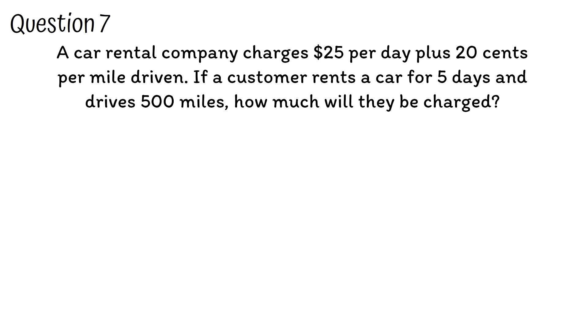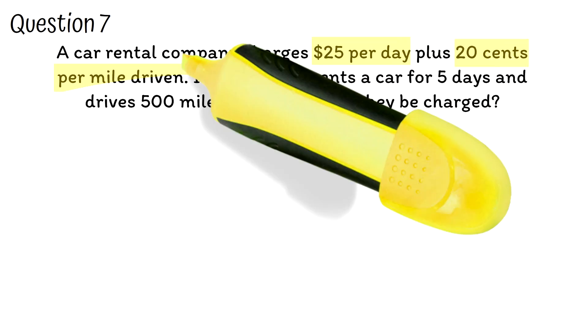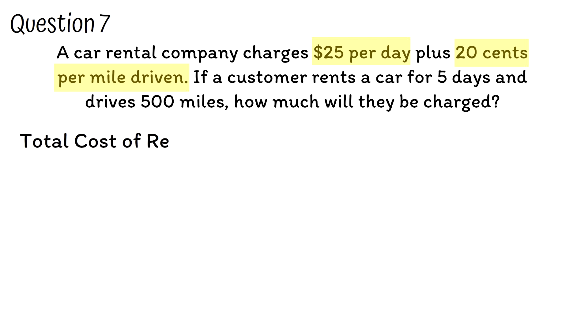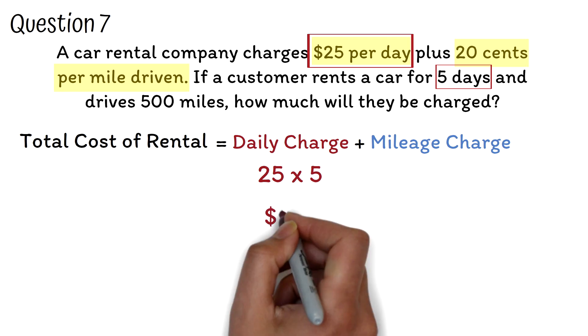There are two charges here. The charge for the number of days and the charge for the mileage. So, the total cost of renting the car is the sum of the daily charges and the mileage charge. The daily charge is $25 per day and the customer rented the car for 5 days. So, the total daily charge is $25 times 5 days. This will give us $125.